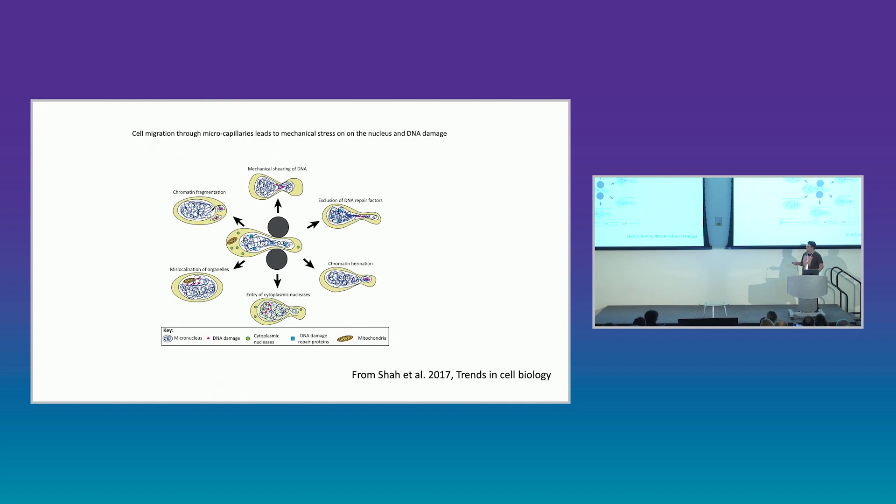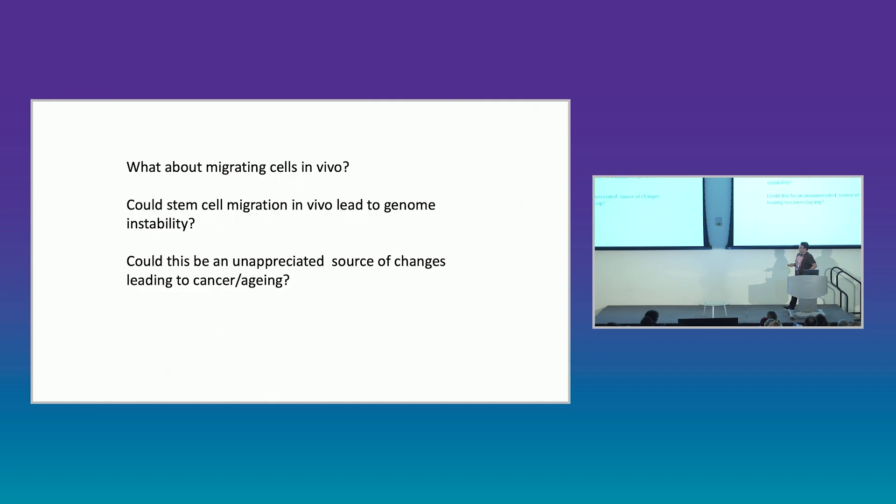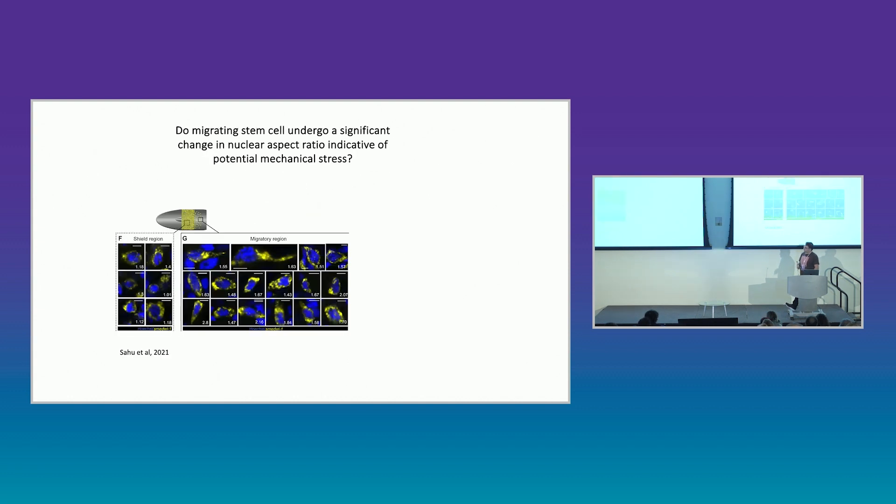So these were these two projects. And they came together because we realized during this work that a lot of labs were publishing papers, very interesting papers, about how pushing cells through small gaps or forcing them to migrate can damage the genome. But all of these experiments were being done in vitro or ex vivo and then cells being put back in. And we asked the question, is there evidence that this happens naturally in migrating stem cells? So during regeneration, cells are going to have to migrate to some extent. And so is this like an unforeseen cost to this process?